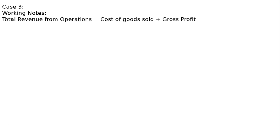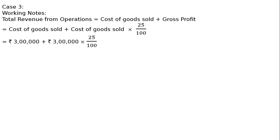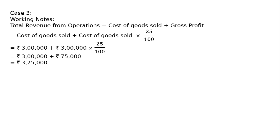Working notes: Total revenue from operations is equal to cost of goods sold plus gross profit, that is cost of goods sold plus cost of goods sold multiplied by 25%, which equals Rs. 3 lakh plus Rs. 3 lakh into 25%, that is Rs. 3 lakh plus Rs. 75,000, giving total revenue from operations of Rs. 3 lakh 75,000.